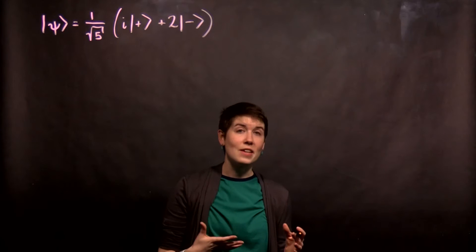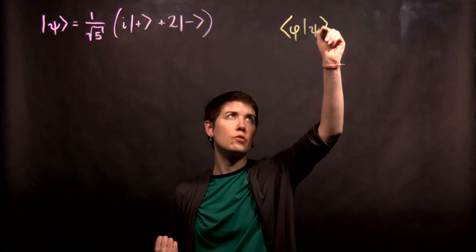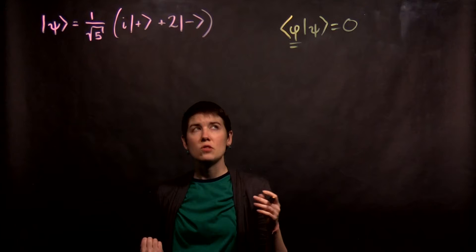What does it mean for the state to be orthogonal? That means that our inner product is equal to 0. So I want to find my state phi such that this is true.